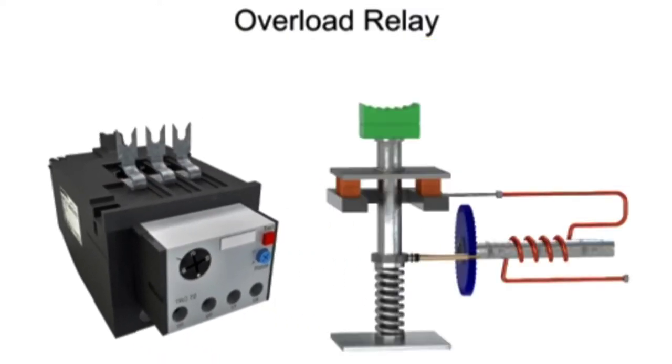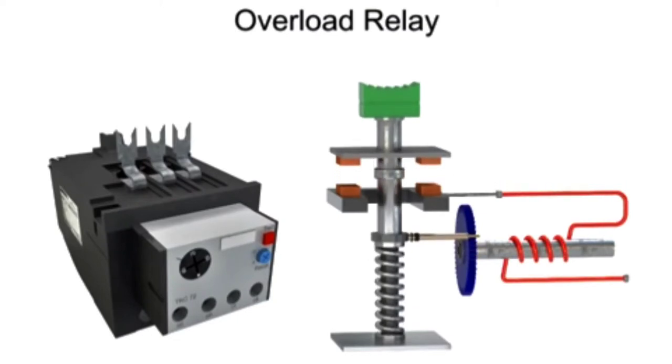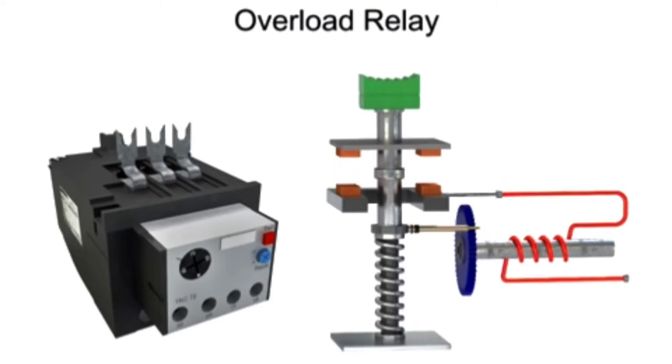When an overload relay trips, it opens contacts within the control circuit, stopping the motor.